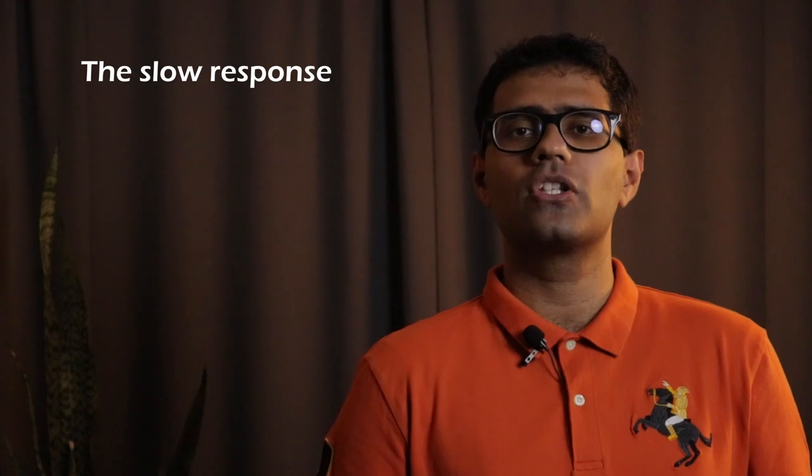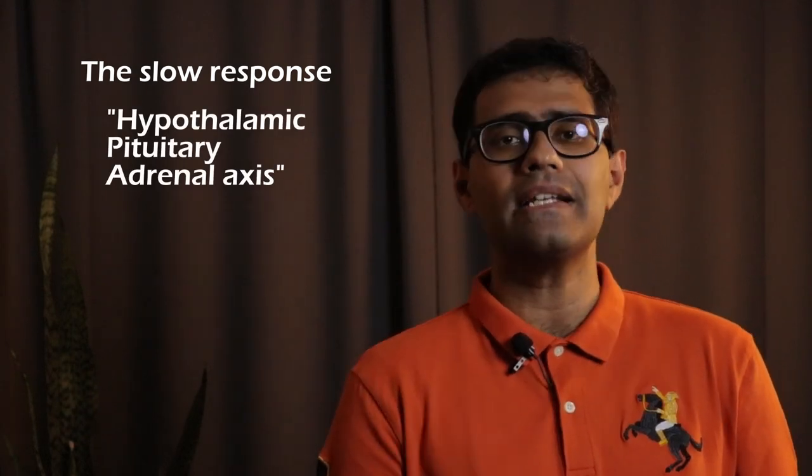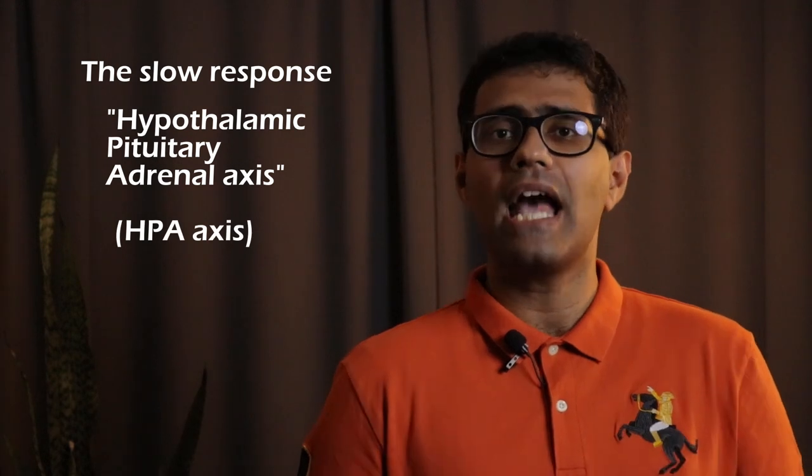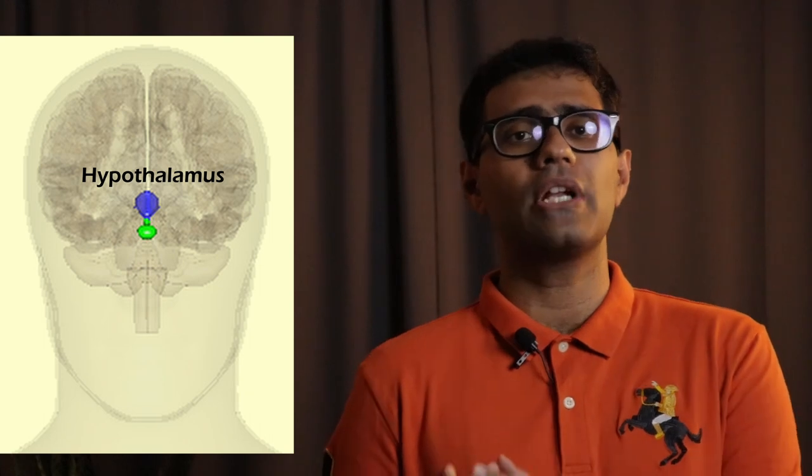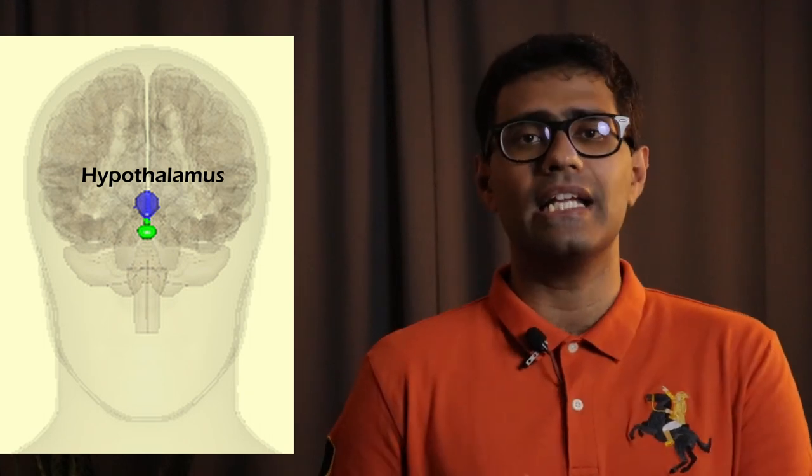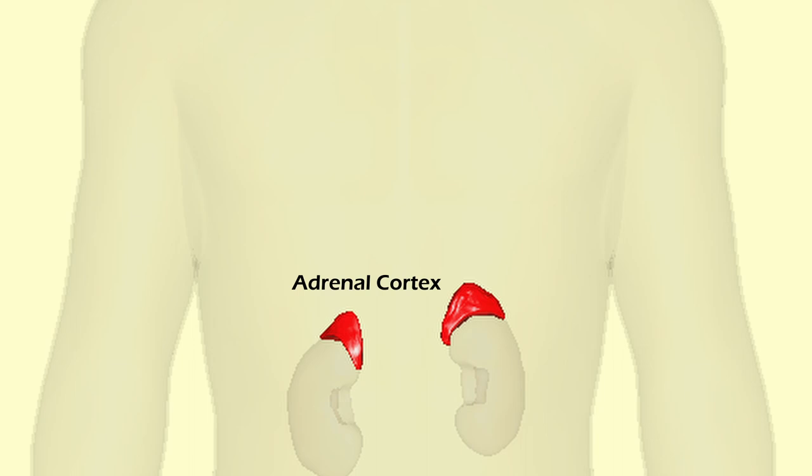The slow response, which is also known as the hypothalamic pituitary adrenal axis or HPA axis. The hypothalamus is the part of the brain responsible for temperature regulation, eating, drinking, and sexual behavior. The hypothalamus stimulates the pituitary gland, which in turn makes the adrenal cortex release cortisol.